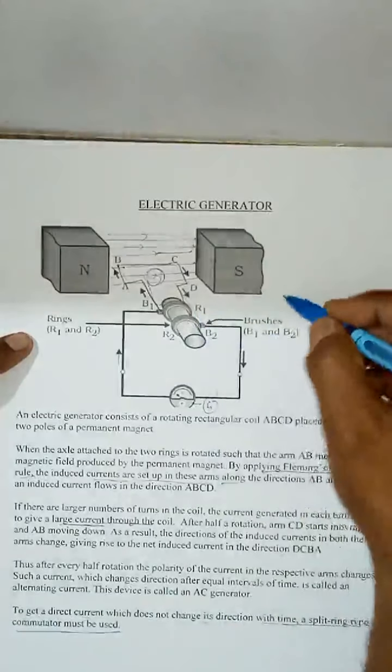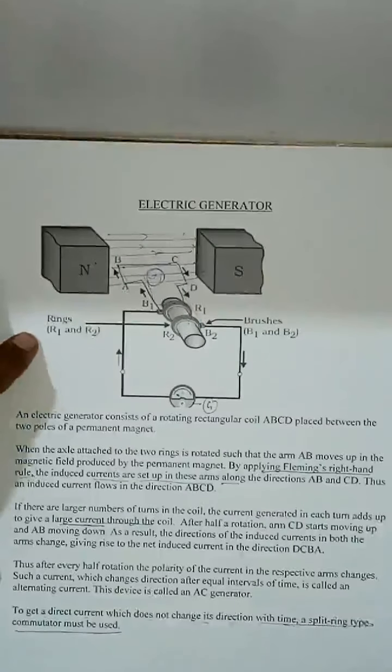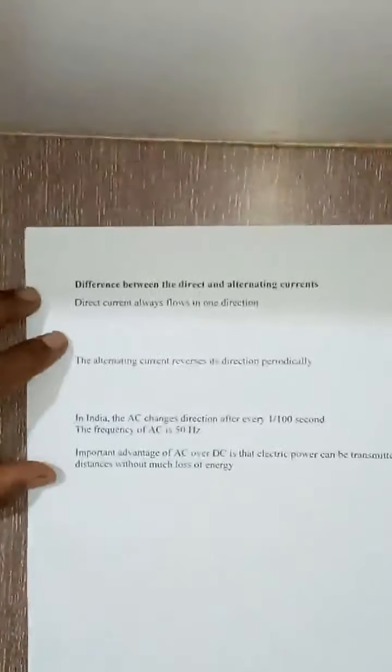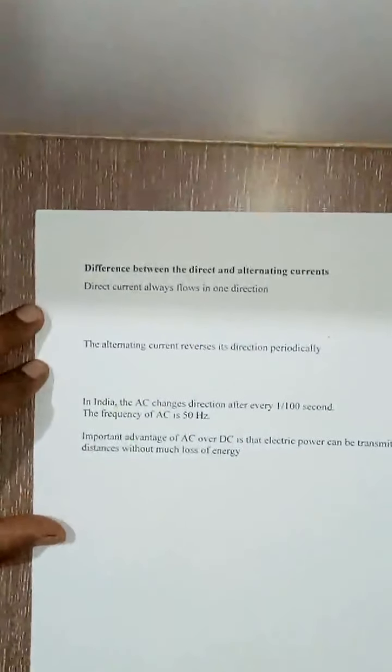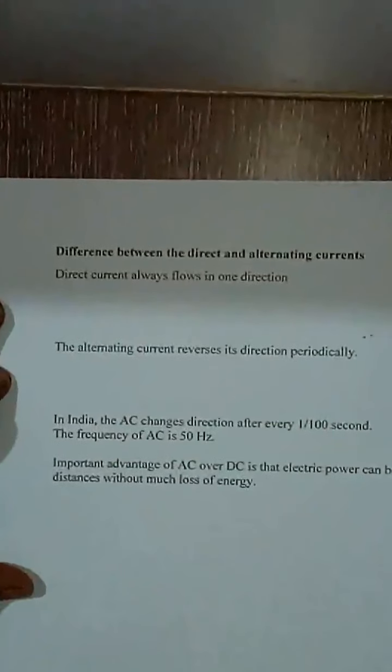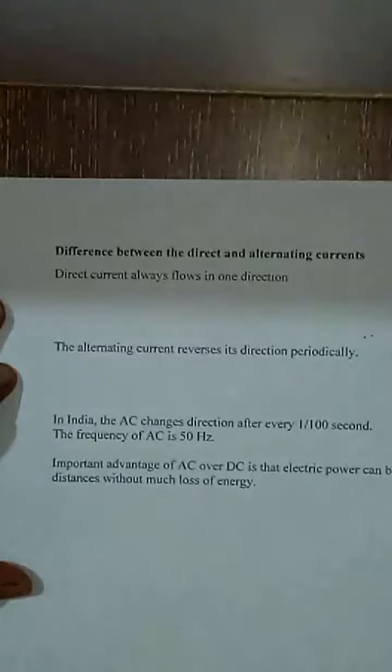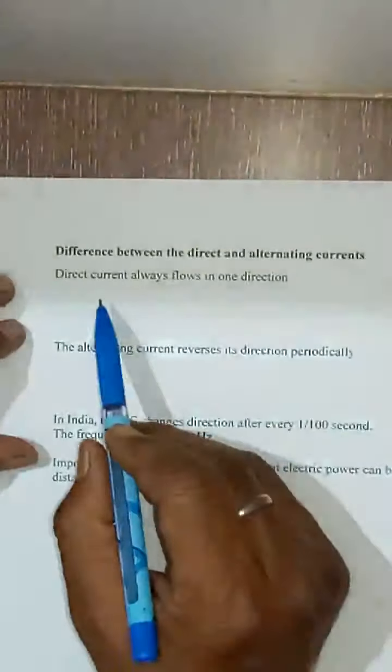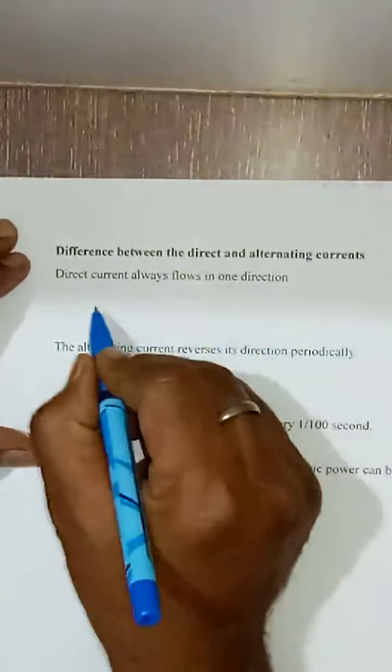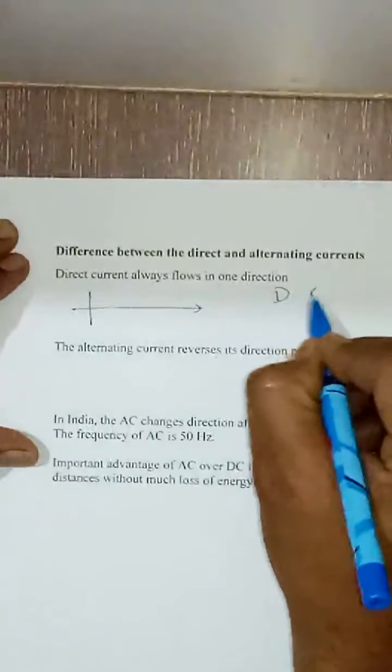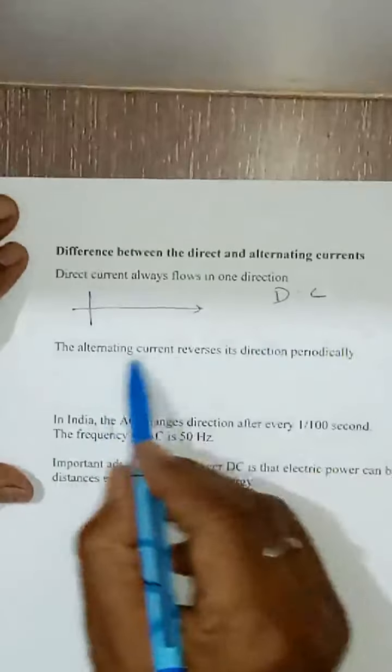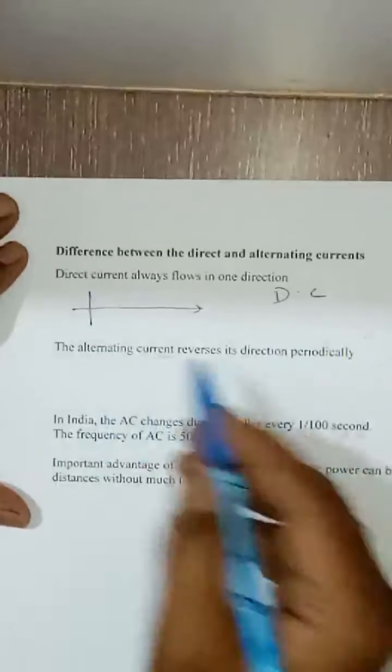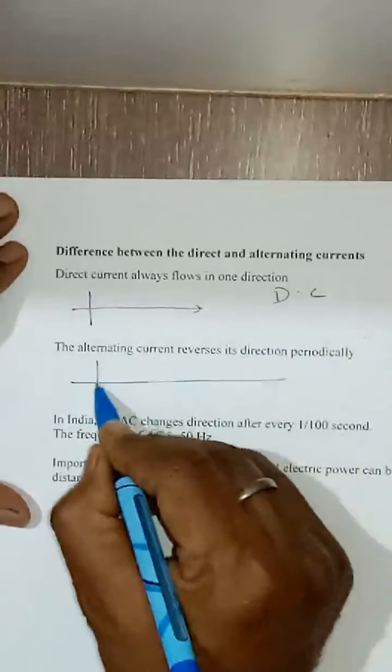Now coming into the different topics. Difference between direct and alternating current. Direct current always flows in one direction. This can be produced by battery and all that. Alternating current reverses its direction periodically like that, it goes in that way.